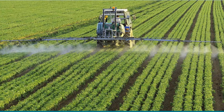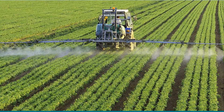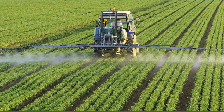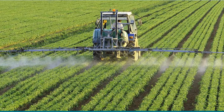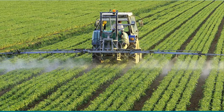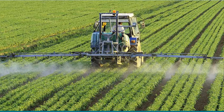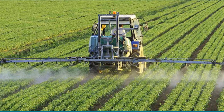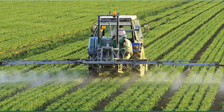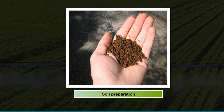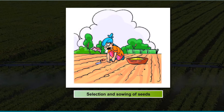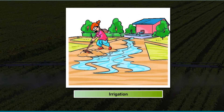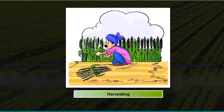Agricultural Practices. Modern agriculture is carried out in a scientific and systematic manner. For growing crops, farmers perform a series of activities over a period of time in a particular sequence. These activities are called agricultural practices. Agricultural practices can be subdivided into the following steps: Soil Preparation, Selection and sowing of seeds, Adding manure and fertilizer, Irrigation, Crop Protection, Harvesting, and Storage.